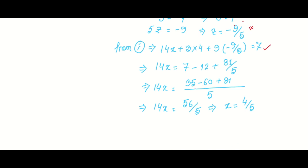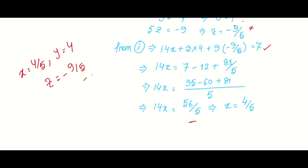After rearranging, we find x is equal to 4 by 3. So the final solutions are: x equals 4 by 3, y equals 4, and z equals minus 9 by 5. This completes the Gauss Elimination method by complete pivoting. Thank you everyone.